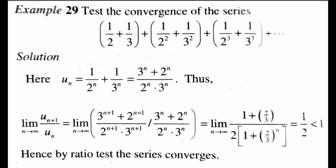The limit as n tends to infinity of u_(n+1)/u_n equals the limit of [(3^(n+1) + 2^(n+1)) / (2^(n+1) × 3^(n+1))] divided by [(3^n + 2^n) / (2^n × 3^n)]. This simplifies to the limit of (1 + (2/3)^(n+1)) / [2 × (1 + (2/3)^n)], which equals 1/2, which is less than 1. Hence by the ratio test the given series converges.